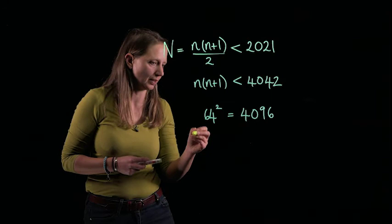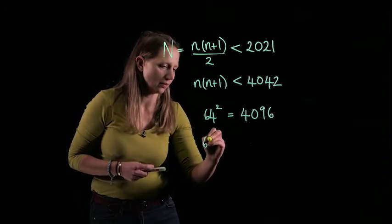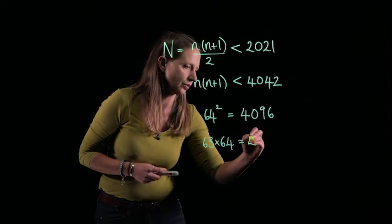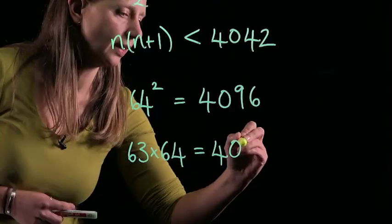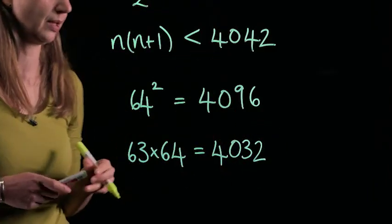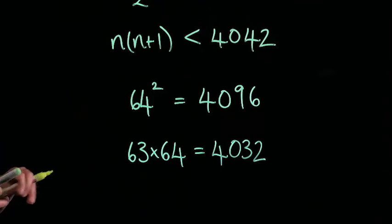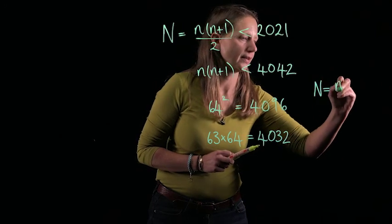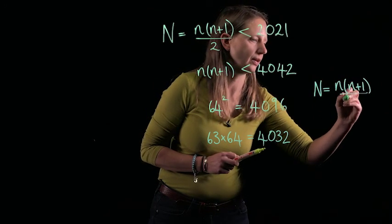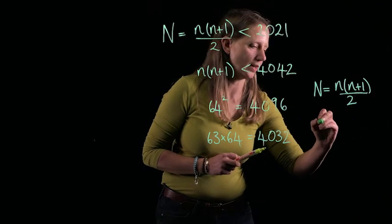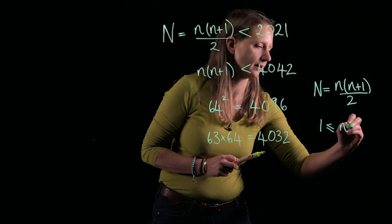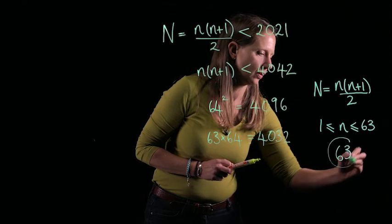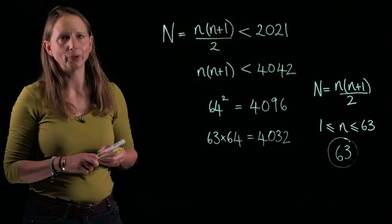Well, 64 squared is equal to 4,096. You may well already know that because it's a power of 2. And so 63 times 64 is equal to 4,032. And that's fine because we're underneath, and we clearly can't squeeze in another triangular number. So we are going to take n as n times n plus 1 over 2 for all values of n between 1 and 63. And this gives us a total of 63 possibilities. And we're done.